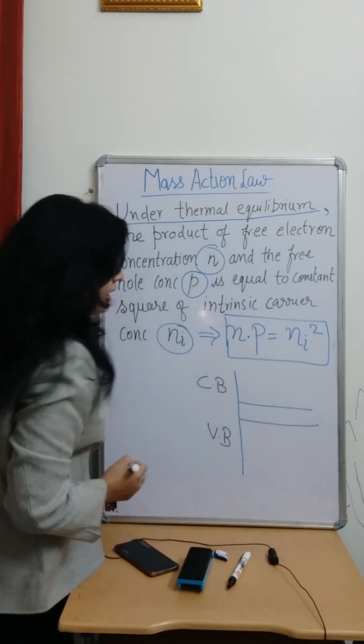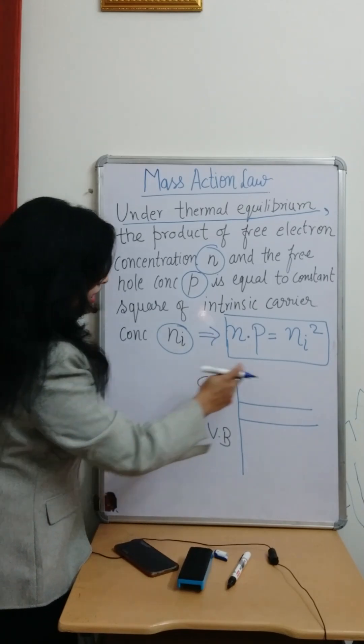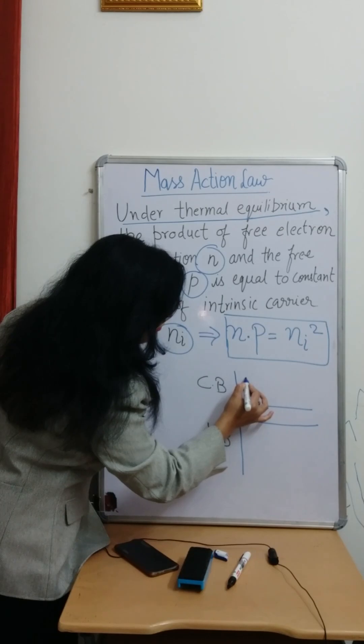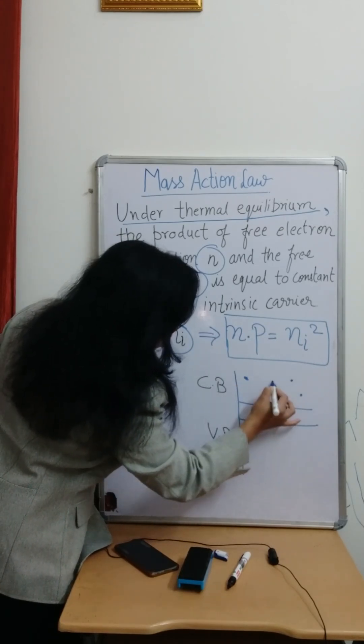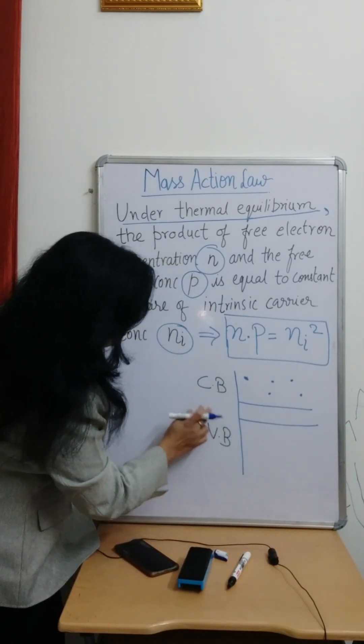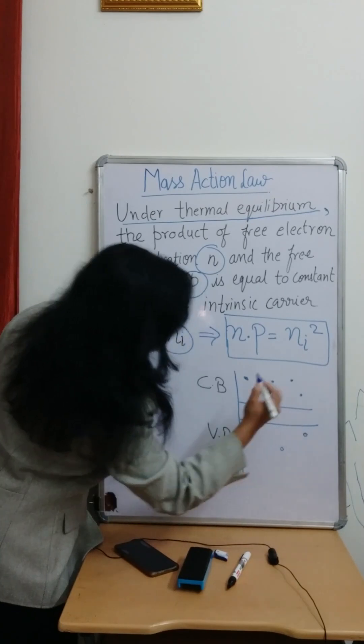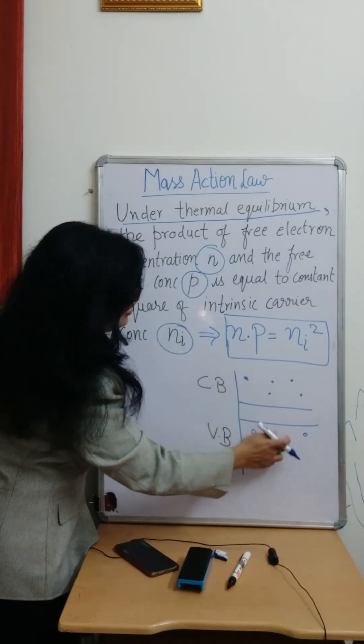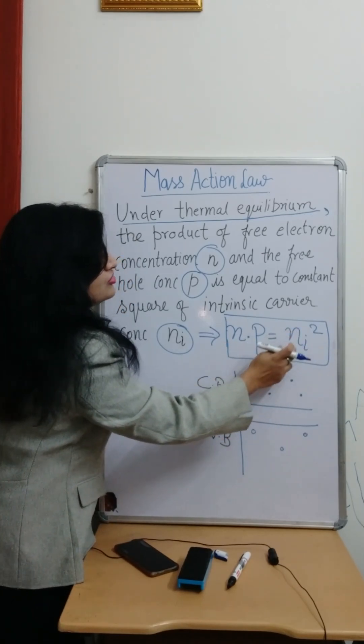If we want to understand the energy band diagram according to mass action law, the number of free electrons in the conduction band and the number of free holes in the valence band - if we find the product of these carrier concentrations n into p, that will always be equal to intrinsic carrier concentration.